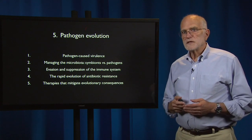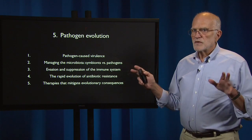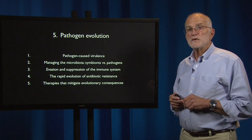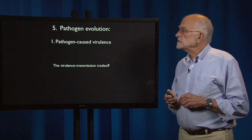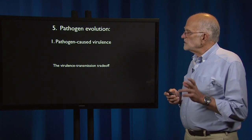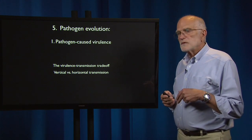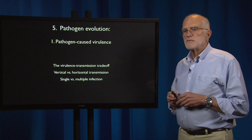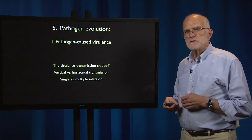Pathogens have their own agendas. They respond flexibly and rapidly to anything that we do to them, and you can think of them as being primarily interested in their own reproductive success and not really interested in what happens to you, either good or bad. The key ideas in pathogen-caused virulence are: the trade-off between virulence and transmission, the distinction between vertical and horizontal transmission, and the distinction between single and multiple infections — each of which affects intrinsic pathogen virulence.